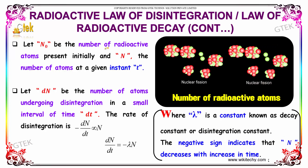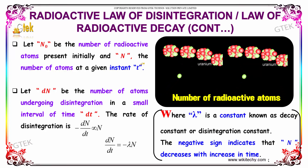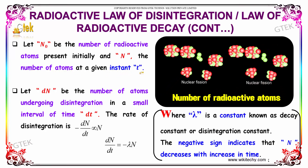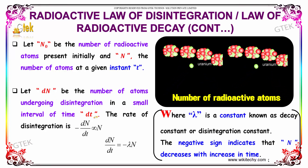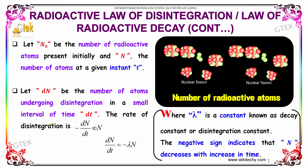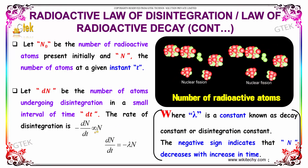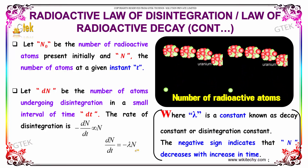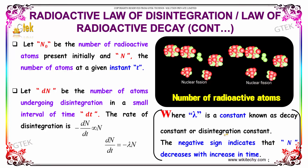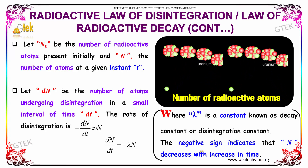Let N₀ be the number of radioactive atoms present initially and N be the number of atoms at a constant time t. Let dN be the number of atoms undergoing disintegration in a small interval of time dt. The rate of disintegration is given by: minus dN/dt is directly proportional to N, so dN/dt = -λN, where λ is a constant known as the decay constant or disintegration constant. The negative sign indicates that N decreases with increase in time.